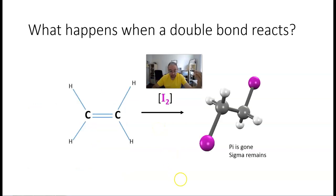When a double bond reacts, for example, with an iodine source, the pi bond is broken and the sigma remains.